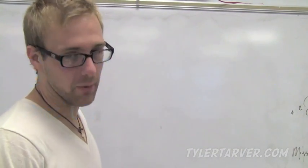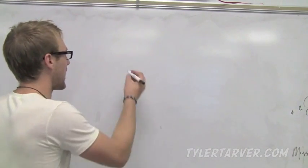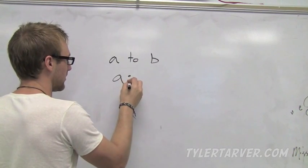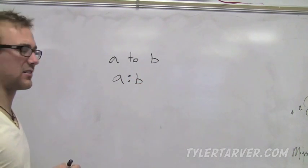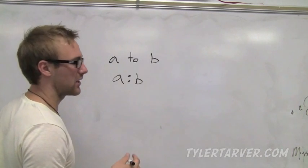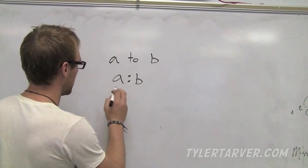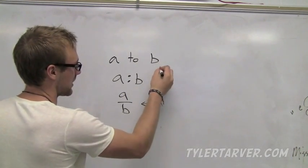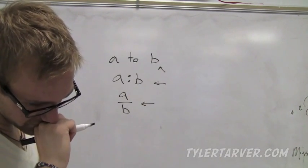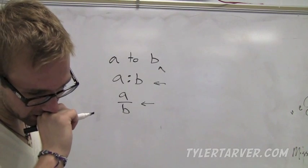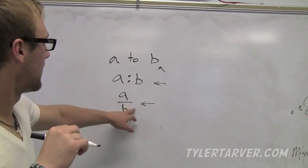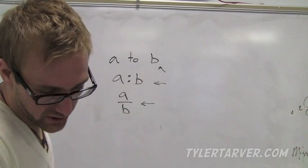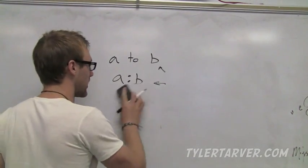A ratio compares two numbers by division. The ways to write it are A to B, A colon B, and A over B. You'll see this one the most or this one. You'll see that one sometimes in word problems. Obviously B can't be 0 because you can't divide by 0.